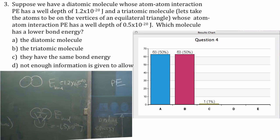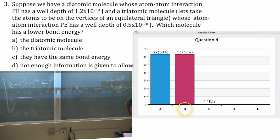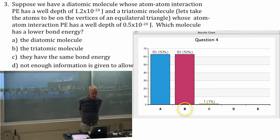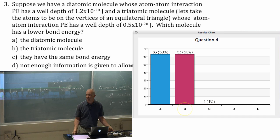So the lower bond energy, B, the triatomic molecule, negative 1.5 is a lower bond energy than negative 1.2. Just adding them up. Any questions about that one?